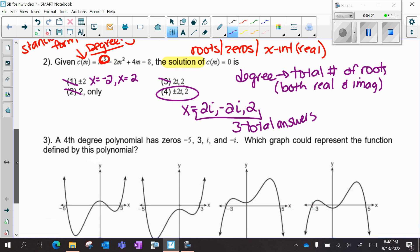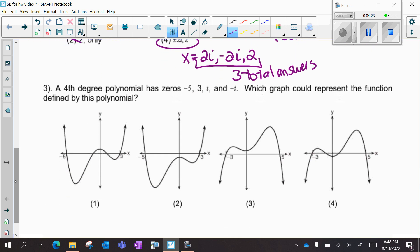And then lastly, number three. A fourth degree polynomial has zeros negative 5, 3, i, and negative i. Which graph could represent the function defined by this polynomial?